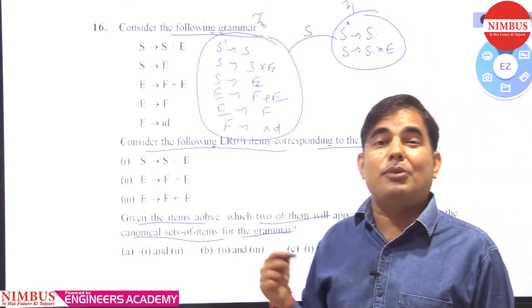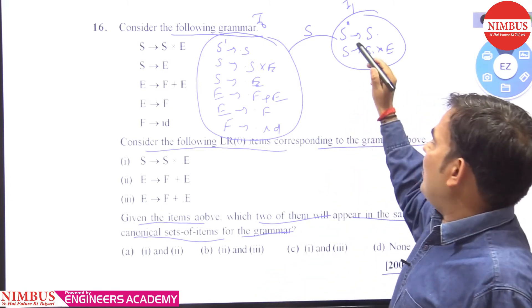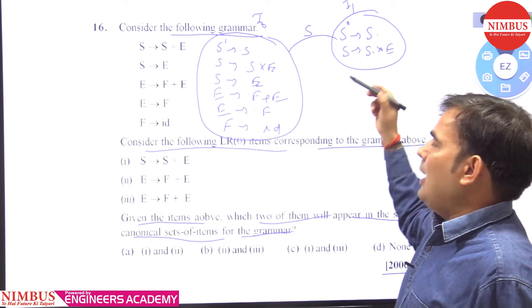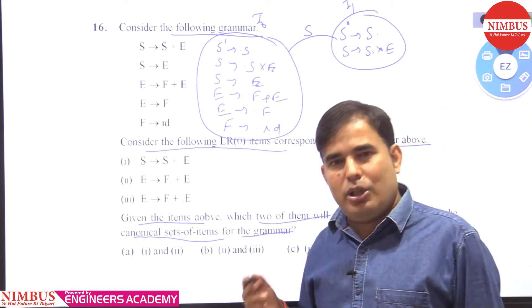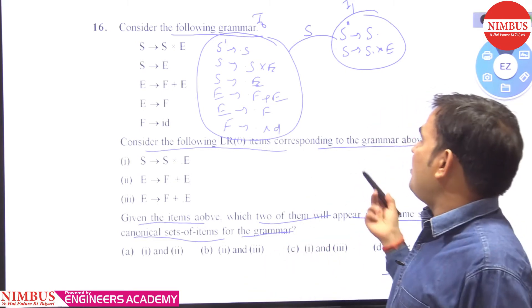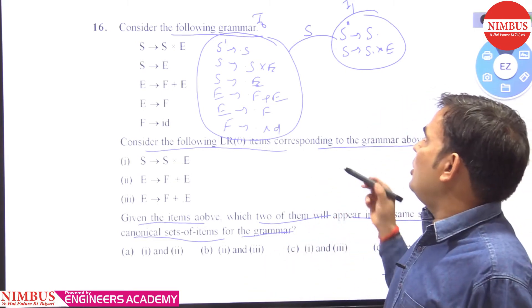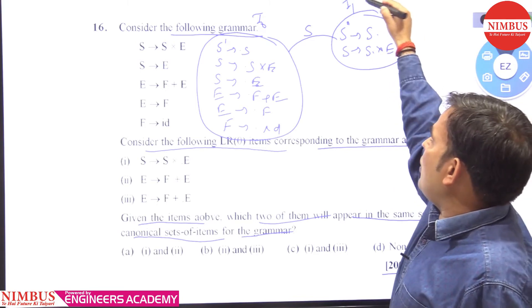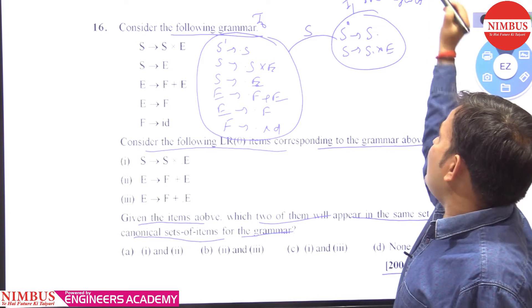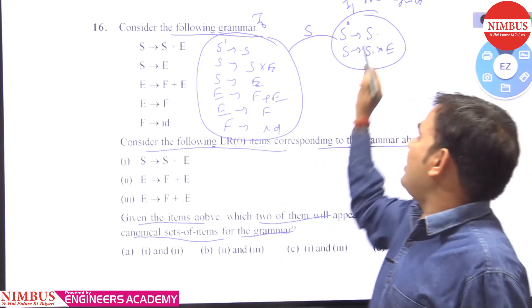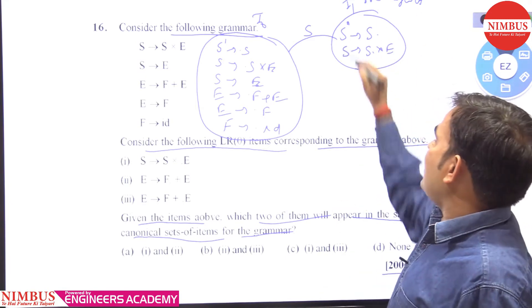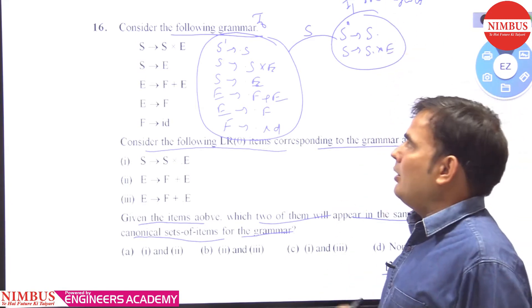These types of conflict — when on giving any non-terminal or terminal input we get both a reduce production and a shift (dot moves on that input) — this type of conflict is called SR conflict, i.e., shift-reduce conflict. So in I1 state we have a shift-reduce conflict.